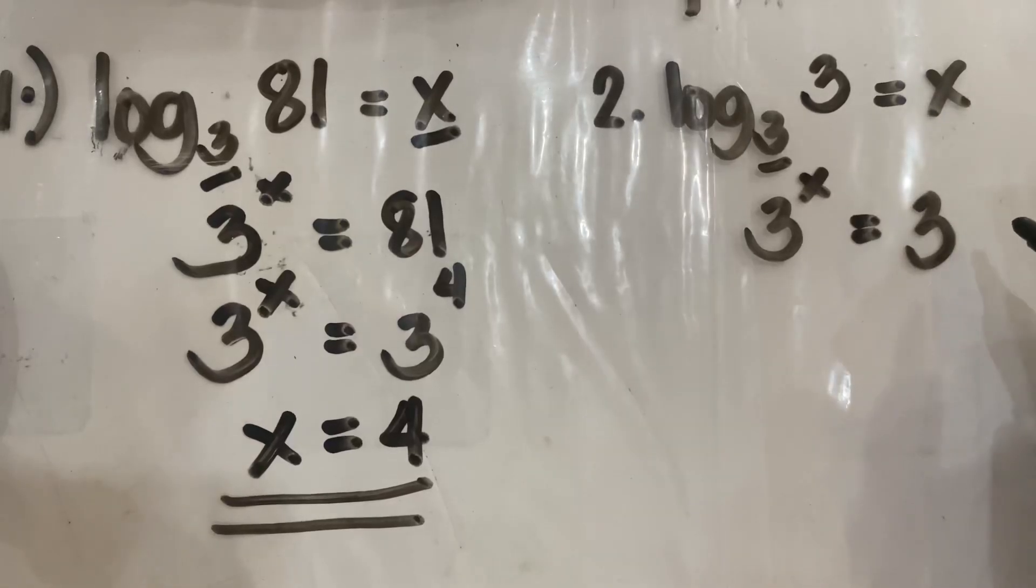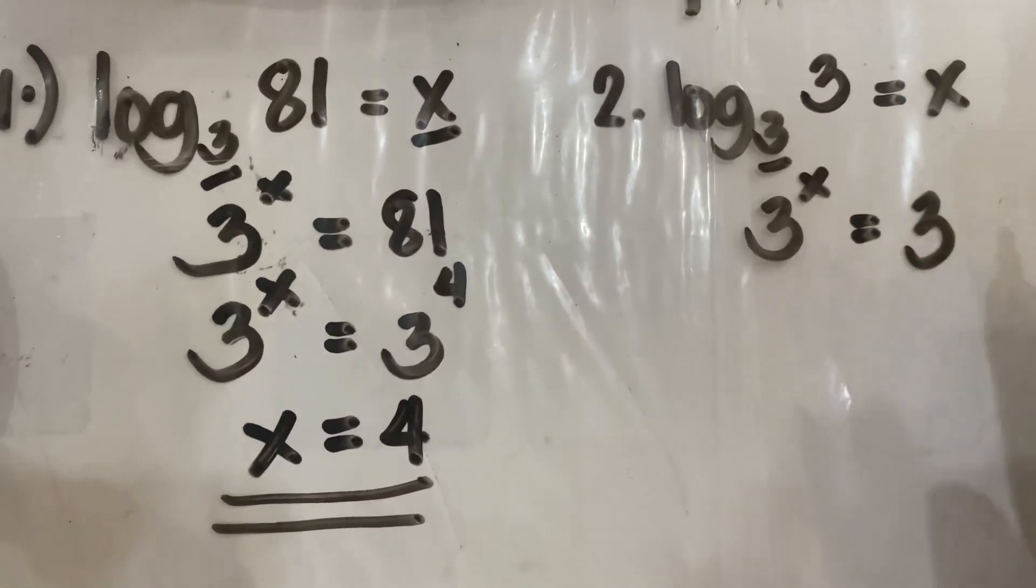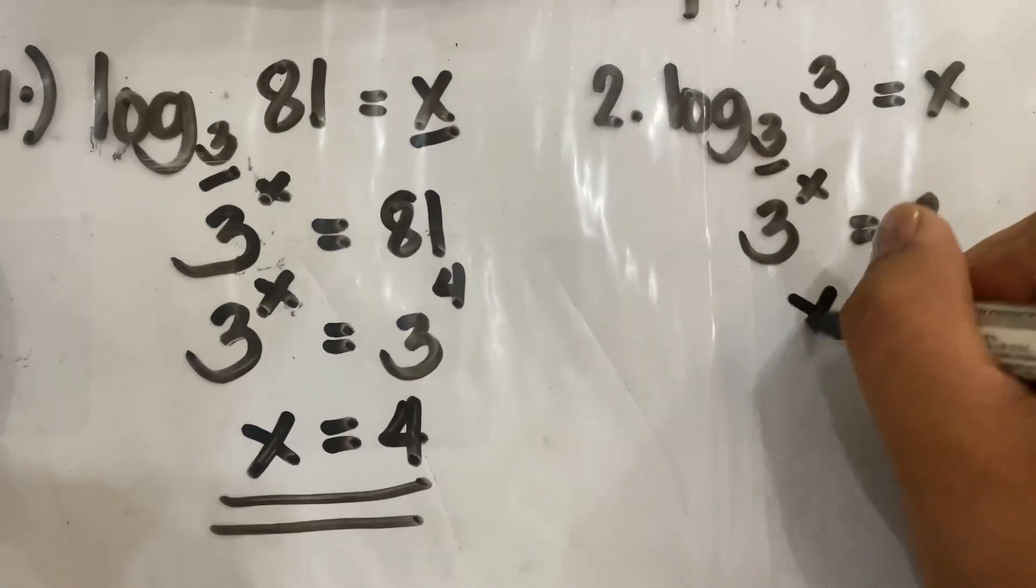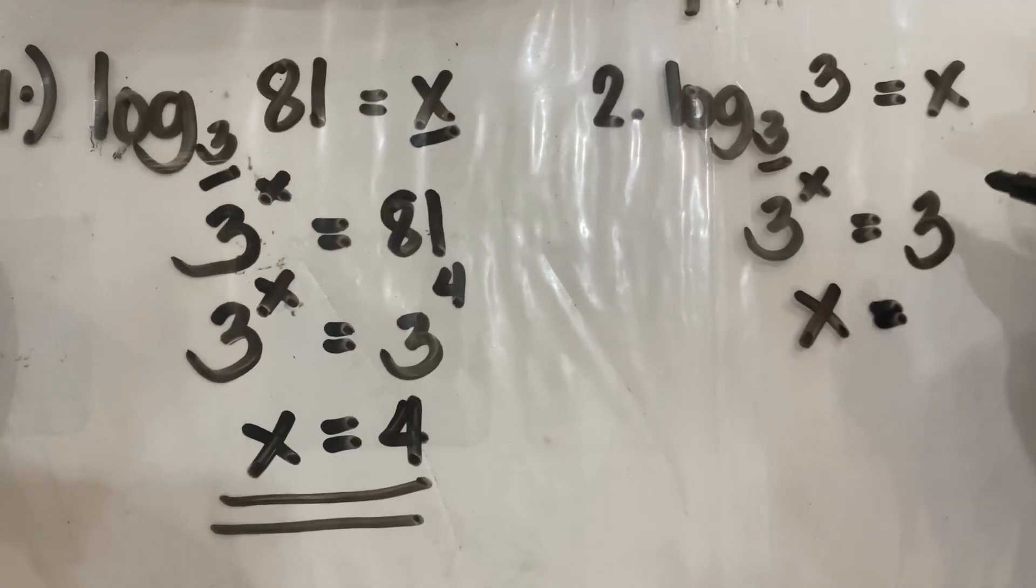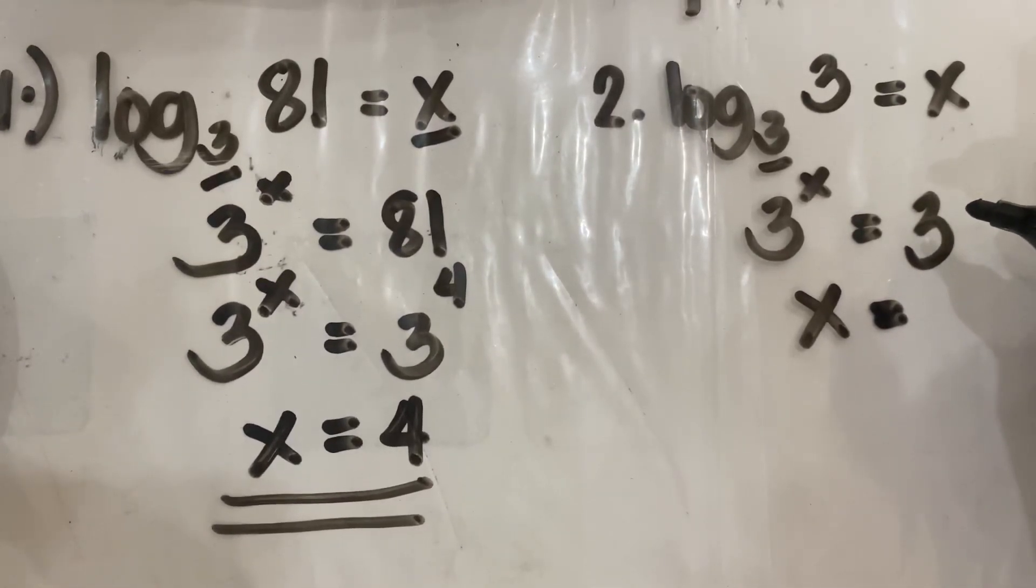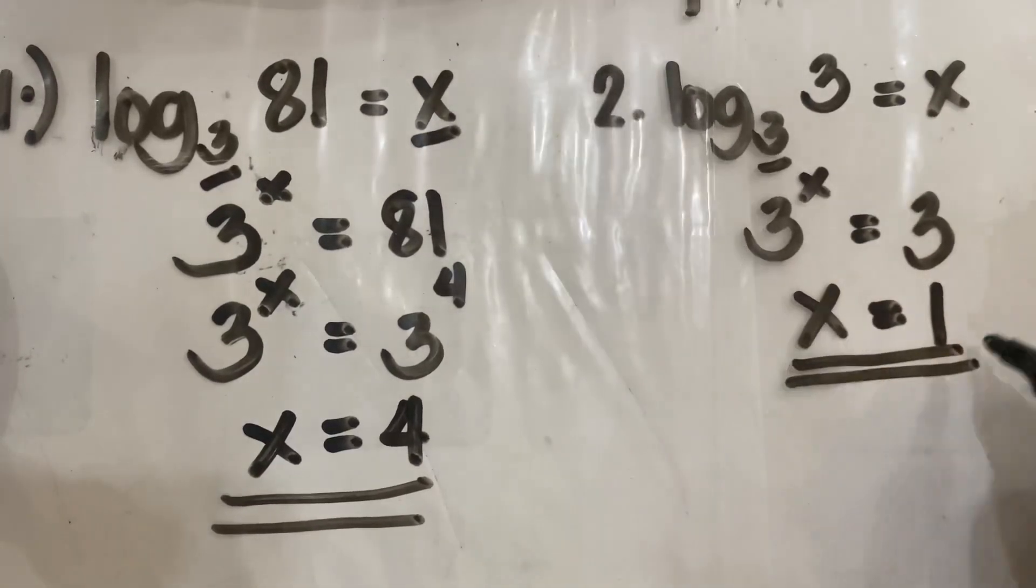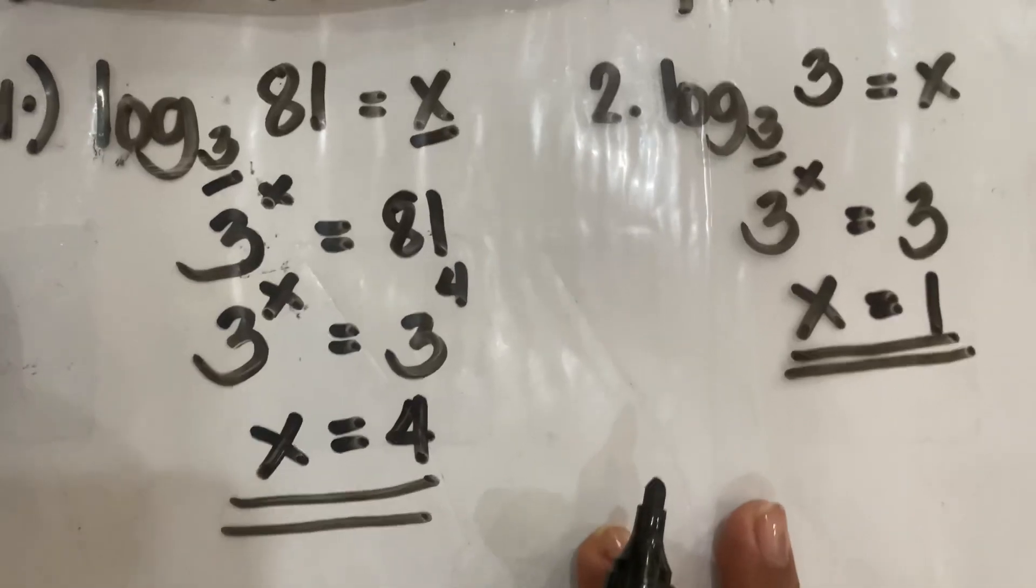Thus, since you have already the same basis, so it means that you can easily equate the exponent. So we have here the exponent x equals... Remember, guys, that if a number has no indicated exponent, it means that it has an imaginary exponent of 1. Thus, your x is equal to 1.